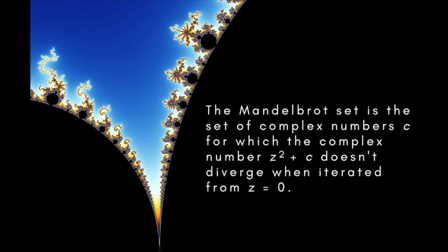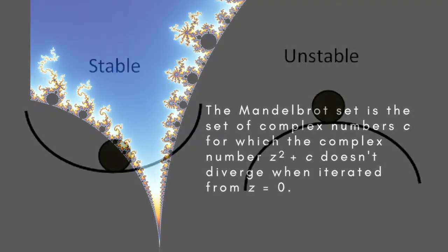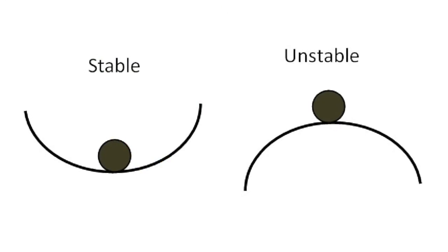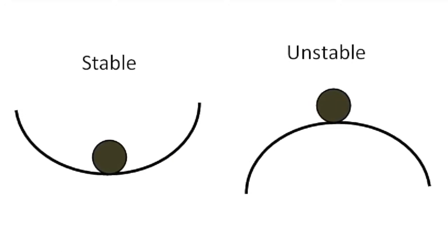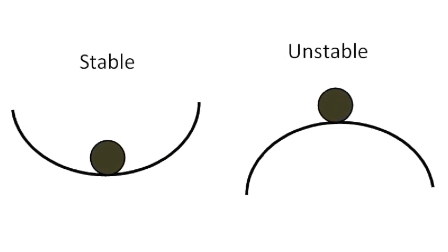if we can change z very slightly and have the new value follow a path that stays very close to the original path. This is like the situation of a ball in a valley. If the ball is moved slightly, it will just roll back to its original position, and is therefore stable.